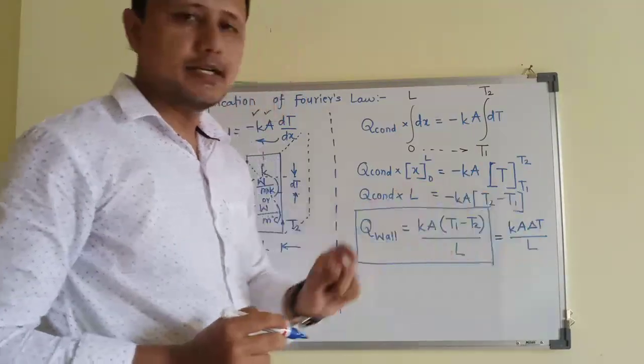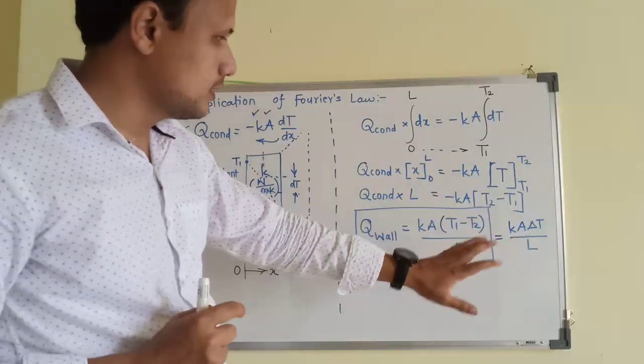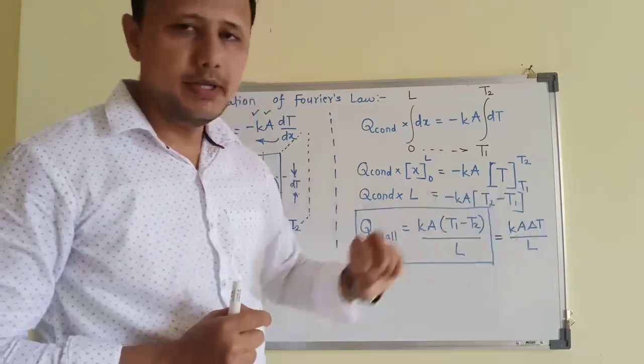So always we consider it in the simplest form as KA delta T upon L. From physical understanding we can directly write down this delta T. There is nothing to worry about higher temperature and lower temperature. Simply delta T will be sufficient.